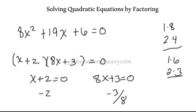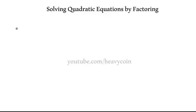You might want to look at the section on solving linear equations if you're unsure how to isolate x here. To verify: plug negative 2 into the original equation and that side should equal 0. Likewise, plug in negative 3 eighths and that side had better equal 0 also.